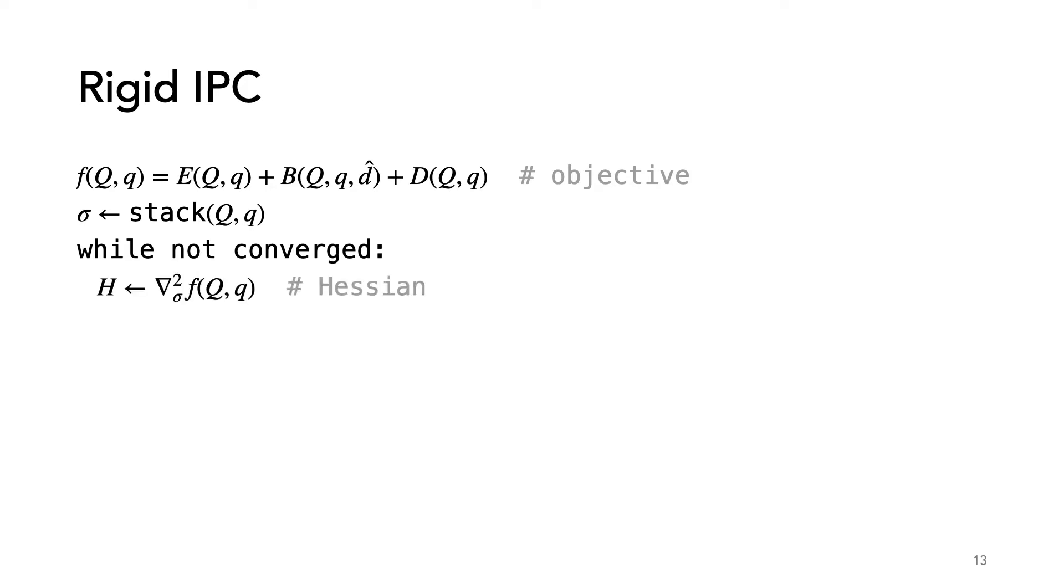To extend IPC to rigid bodies, let's look at the pseudocode for the rigid IPC solve. First, we define potentials in terms of our rotations and positions. Next, we stack our rotations and positions into a single variable called sigma. We again use Newton's method to minimize our objective, computing the Hessian of our objective and defining an update direction.